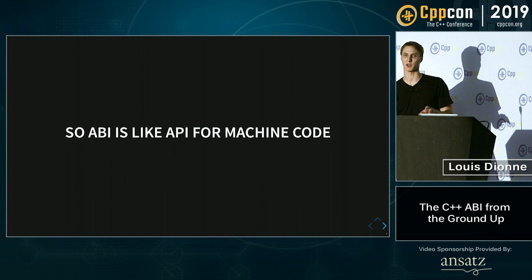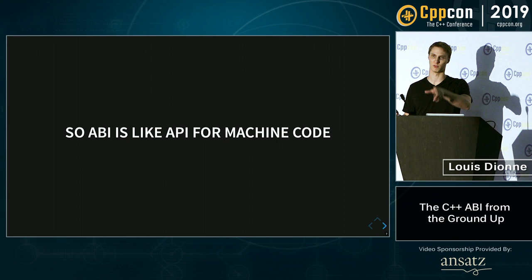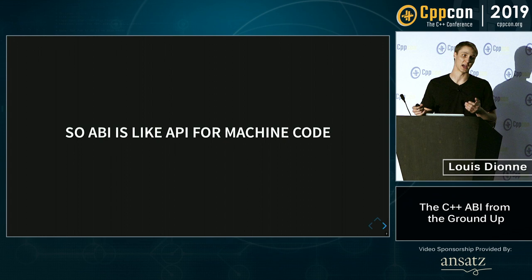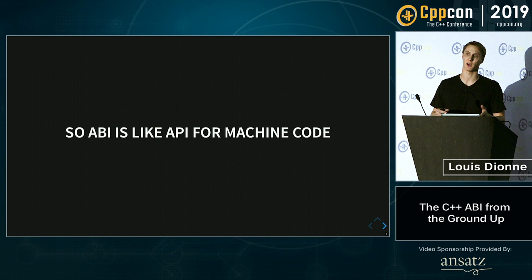I like to think of the ABI as being like the API but for machine code. It defines things like the algorithm for the compiler calling a function. When you call a function in your code you just say function name and arguments — that's it. But under the hood the compiler has to put the arguments somewhere, either on the stack or in registers, and then pass them to the callee. The ABI is what defines these kinds of things.